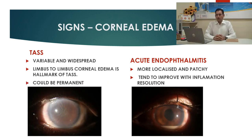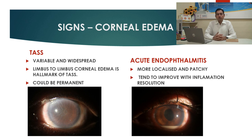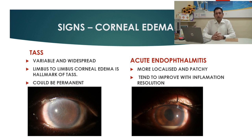Now coming to corneal edema: corneal edema in TASS is a hallmark — there will be diffuse total corneal edema from limbus to limbus. Corneal edema in endophthalmitis will be localized and more patchy.